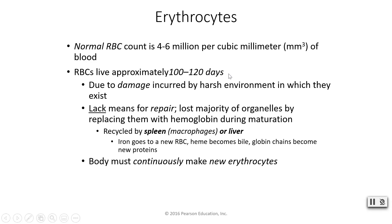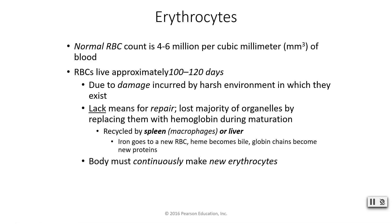Red blood cells have a fairly short shelf life — 100 to 120 days is about the max. They get damaged quite frequently because of the harsh environment in which they live, as blood flows through your veins and vessels and gets beat up day in and day out. And since mature red blood cells don't have a nucleus or most of their organelles, they can't repair themselves if they get damaged.